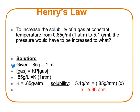So let's look at our given. We are given 0.85 grams per milliliter equals 1 atmosphere. The gas concentration equals K times pressure. So we have 0.85 grams per liter equals K times 1 atmosphere, giving us K equals 0.85 grams per atmosphere. To find the new pressure, we set 5.1 grams per milliliter equal to 0.85 grams per atmosphere times X, and solving for X we get a pressure of 5.96 atmospheres.